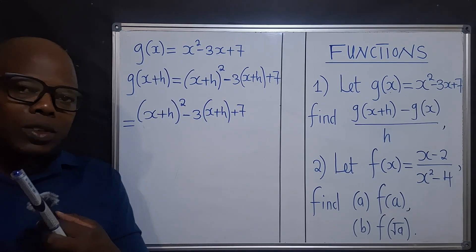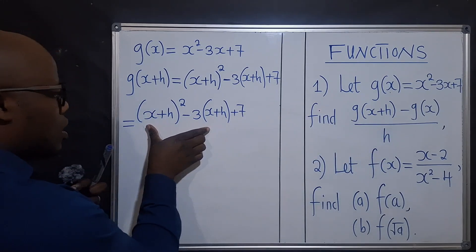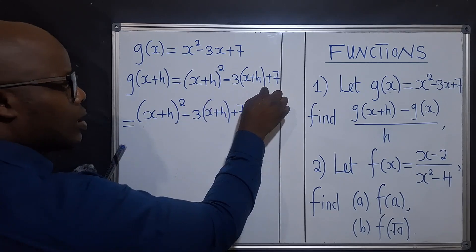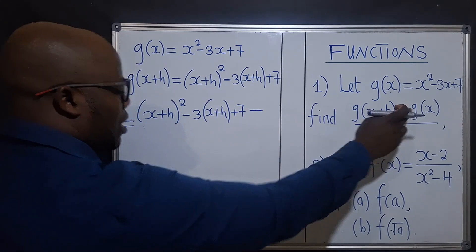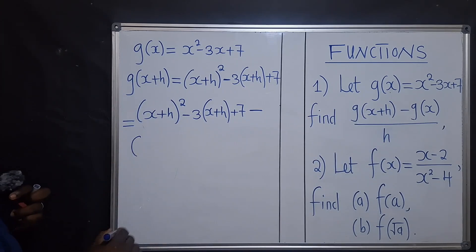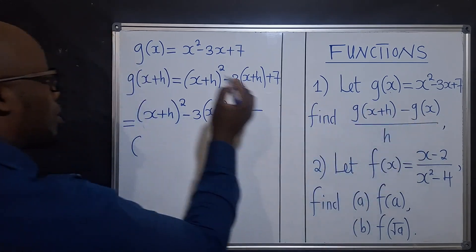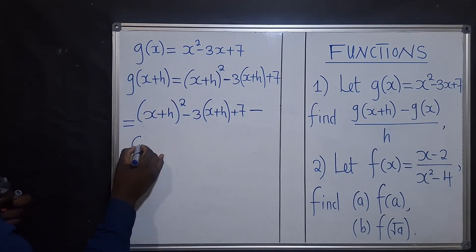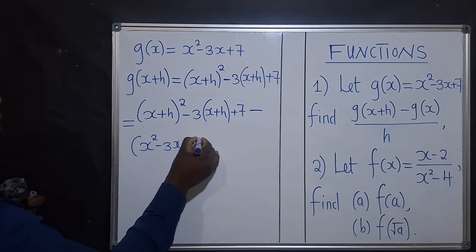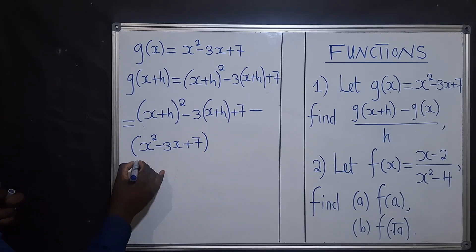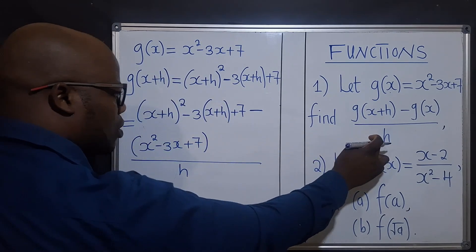Okay, I hope you're able to see. So in place of g of x plus h, we write this. And then say minus — we write the open bracket. We write the g of x, so g of x is x power 2 minus 3x plus 7. We close. And then say over h.